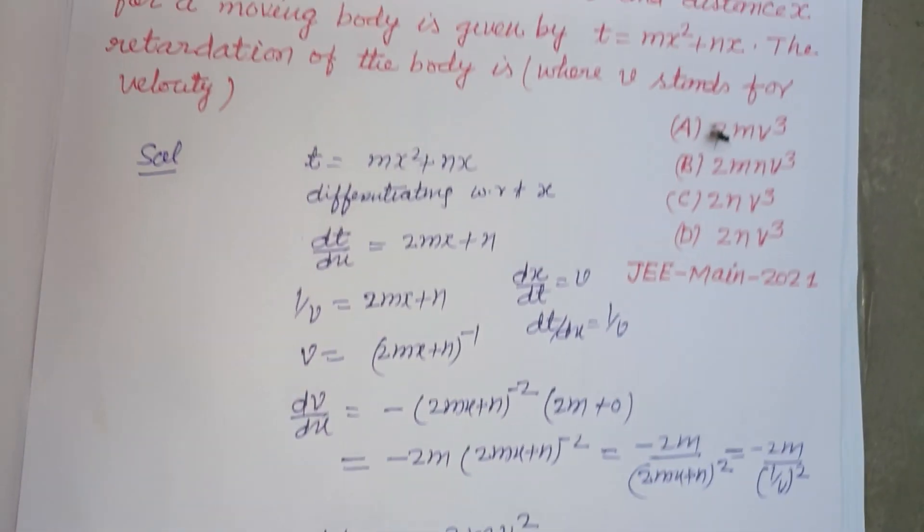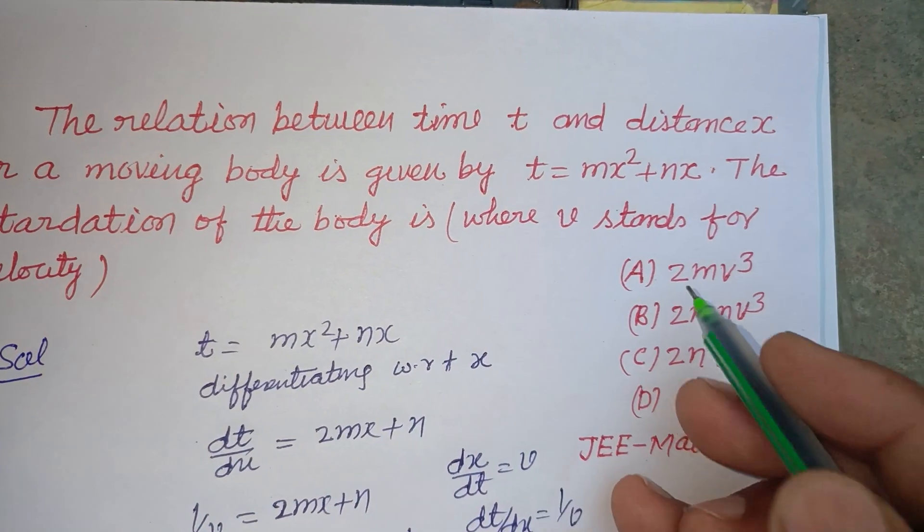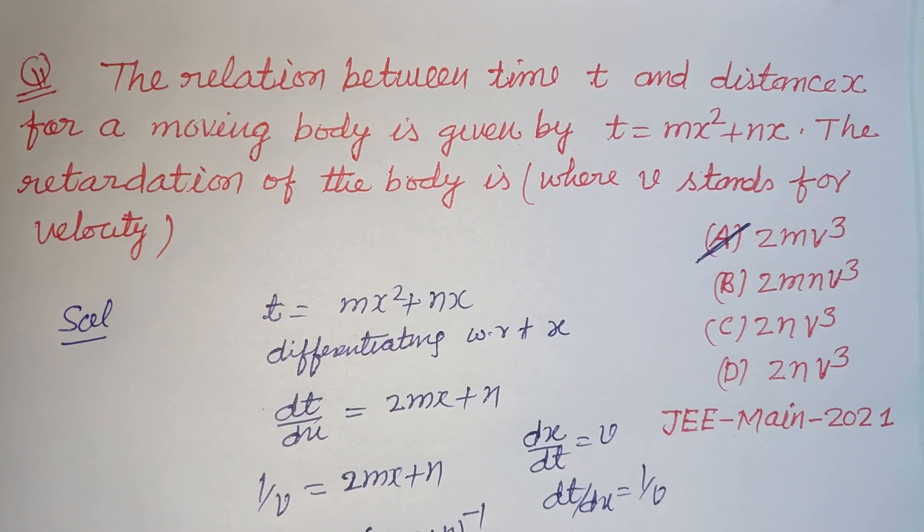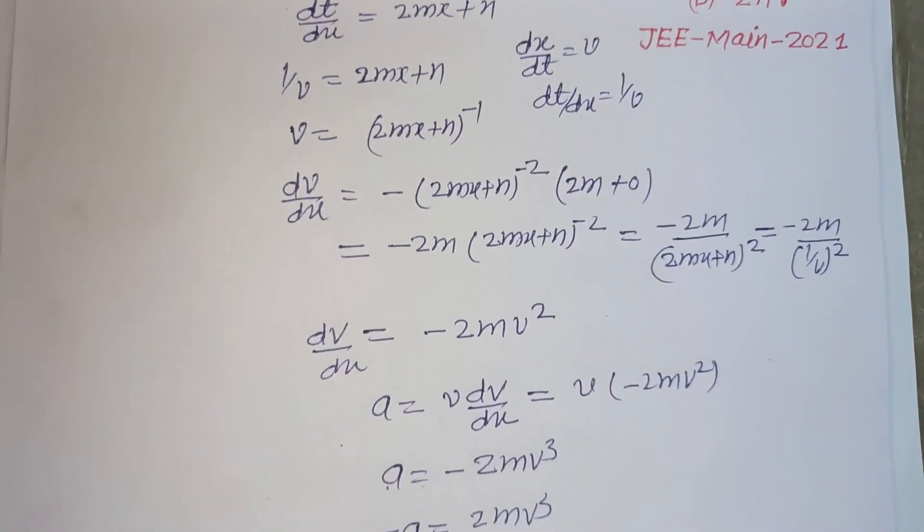So 2m v cubed is the correct answer of this question, which is found in option A. Option A is correct. I hope you got it. Please like the video, subscribe to the channel. Thanks for watching.